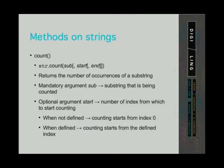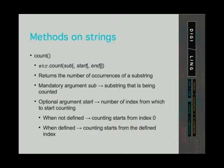The next method we will cover is the count method. The syntax has three arguments: one mandatory argument, the sub argument, and two optional arguments. A square bracket within a square bracket means the third argument is also optional but can only be defined if the second argument is defined. This means the count method can have one argument (the mandatory sub), two arguments (sub and start), or three arguments (sub, start, and end). It cannot have two arguments where one is sub and the other is end.